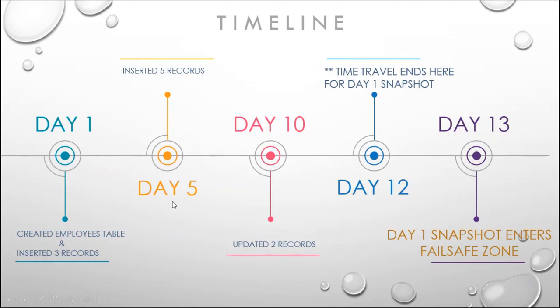But for the snapshot on day five, it will not be moved to the failsafe zone on day 13. It will be moved on the 13th day from day five, which means on day 18 it will be moved into the failsafe zone. Similarly, for day 10, the failsafe zone time period starts at day 23. And for any changes done on day 12, the failsafe zone starts from day 25.